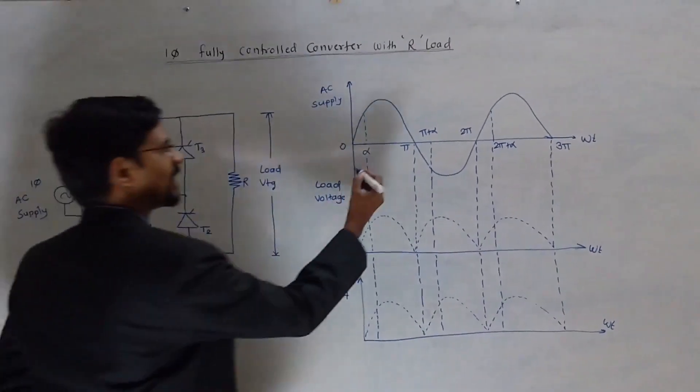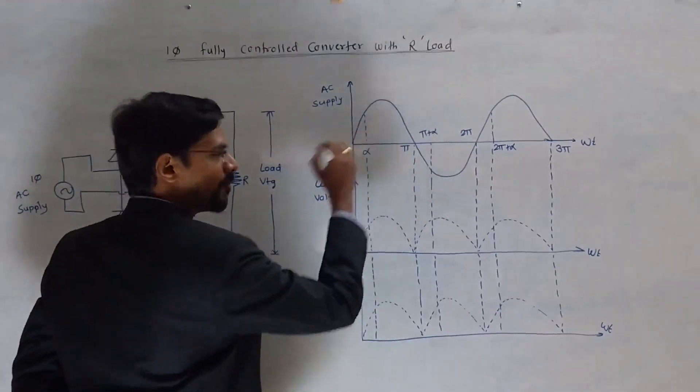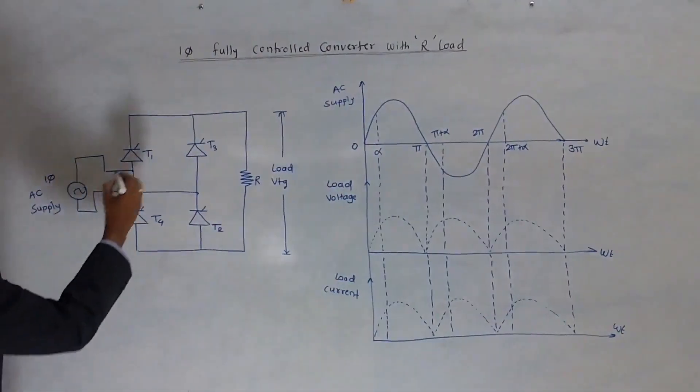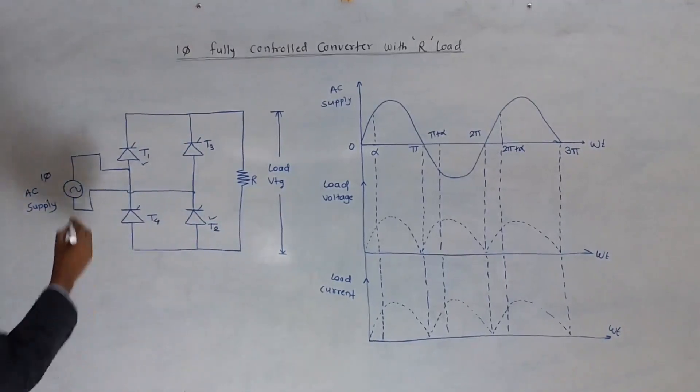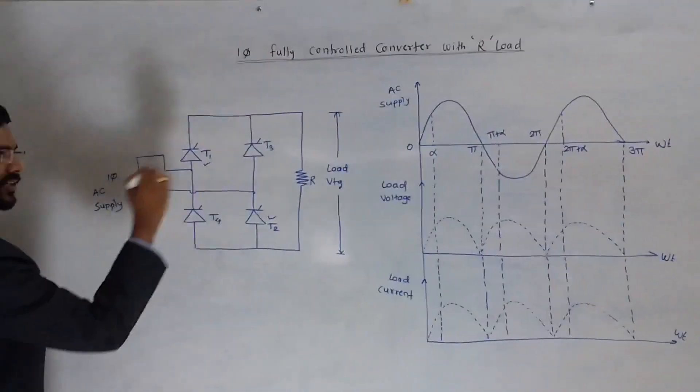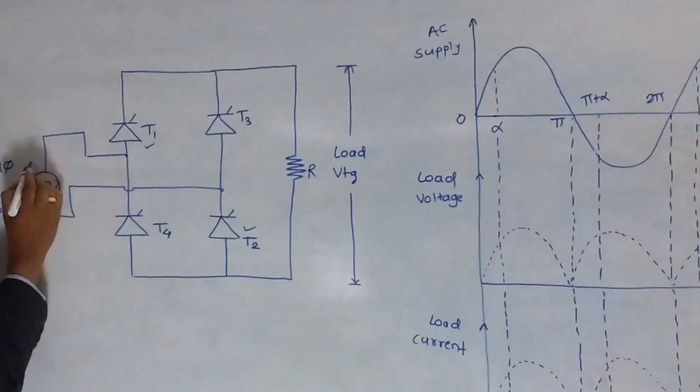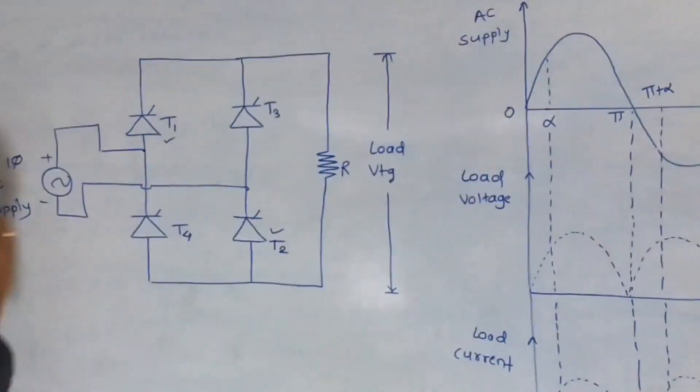Initially, for the positive half cycle from 0 to pi, thyristors T1 and T2 are in forward bias. Why? Because if we consider the positive half cycle from the positive half cycle like this, plus here and minus here.